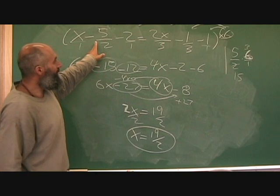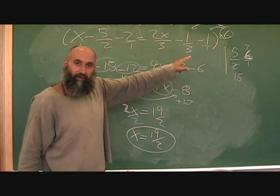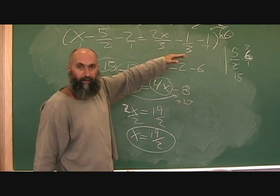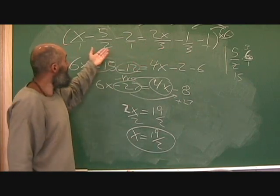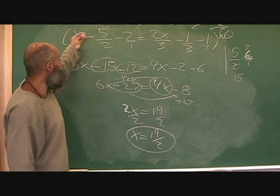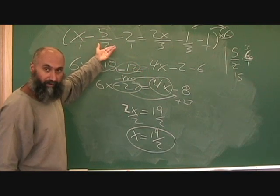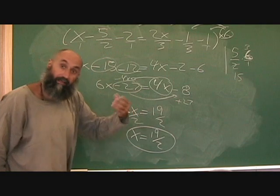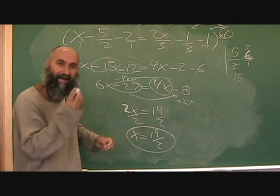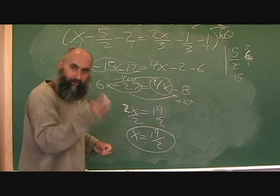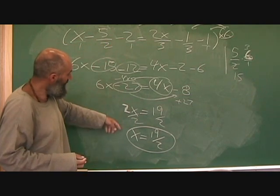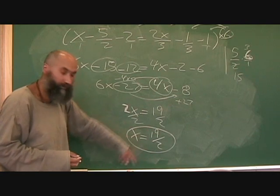We didn't have to write down any restrictions because we didn't have any variables in the denominator - they were just numbers. With numbers there is no restriction. The only time you have restrictions is if you have variables, x's or whatever, in the denominator - then the number can vary so you have to state your restriction. For this equation, our solution is x is equal to nineteen over two.